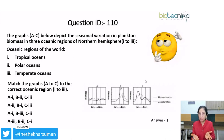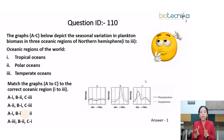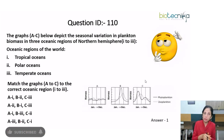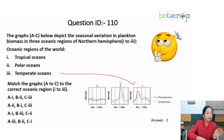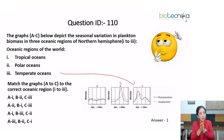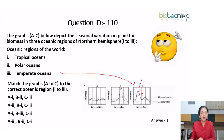Planktons are weak swimmers. Phytoplanktons are autotrophic — like diatoms or green algae. Zooplanktons consist of larval forms and are heterotrophic, feeding upon phytoplanktons. Temperate oceans have a mixture of cold polar oceanic water and warm tropical water. Because of the spring and fall seasons, phytoplankton blooms are seen, followed by an abundance maximum of zooplanktons. This confirms that option 1 is the right answer.